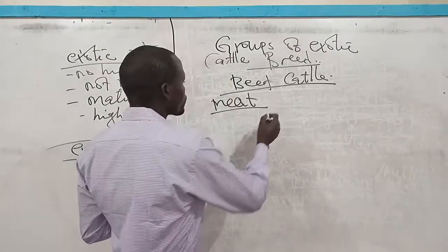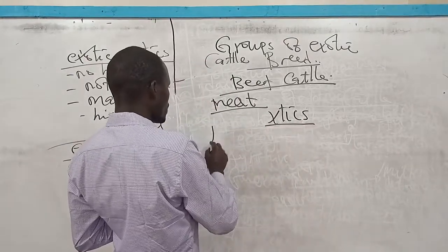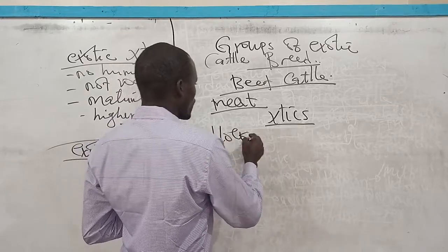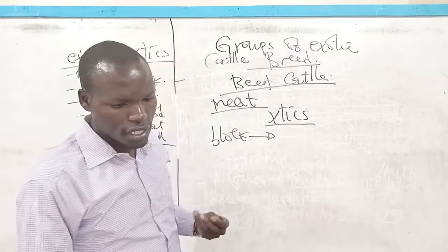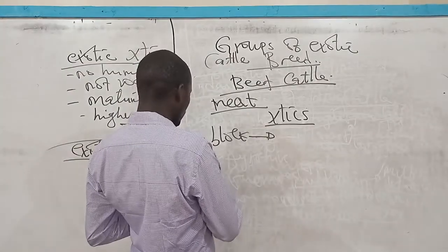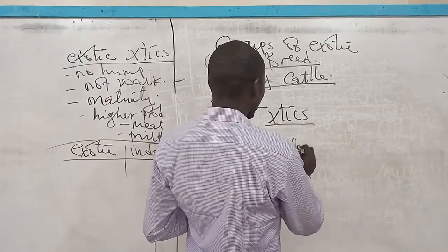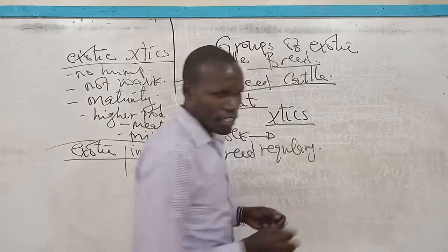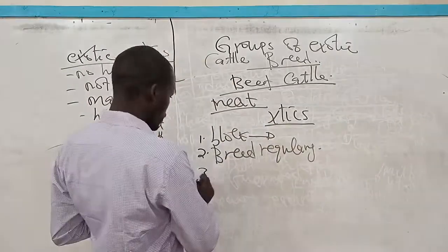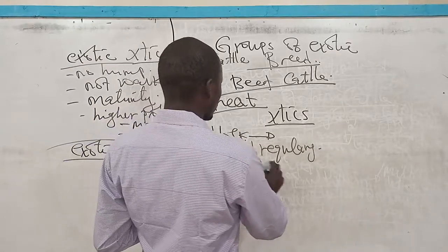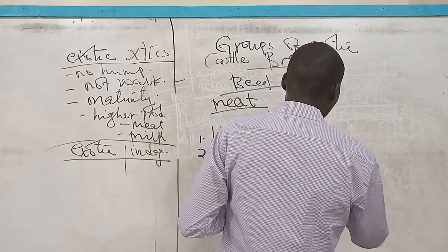The meat. And then we look at some of the characteristics or else the distinguishing features of this cattle. That is one: their body is robust. They have a robust body, so we can see that this is the hind leg, the hind leg, and also they have the short and the strong legs.